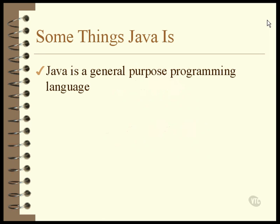Java is a general purpose programming language. In this regard, it's just like C, C++, Pascal, COBOL, FORTRAN, and any number of others. It's for writing programs, any kind of programs. Sure, it has some special purposes, such as writing embedded programs for cell phones,